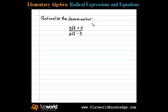To rationalize the denominator, I notice the denominator is a binomial. When this is the case, we multiply the numerator and denominator by the conjugate of that denominator. In this case, we'll multiply by 2 square root of 5 plus 3.